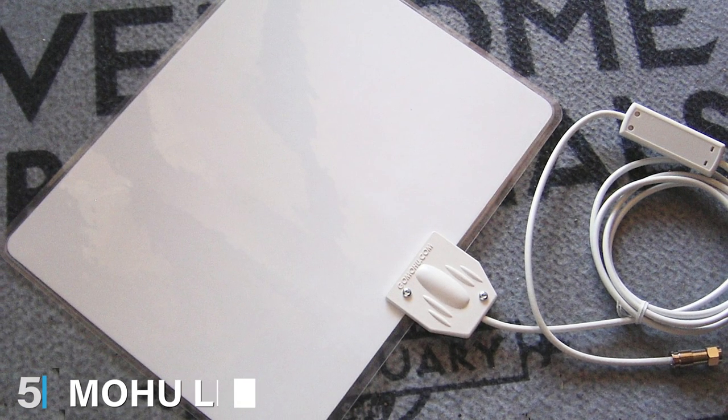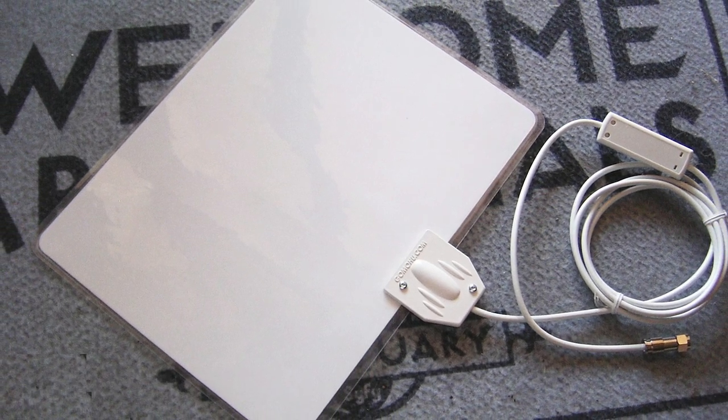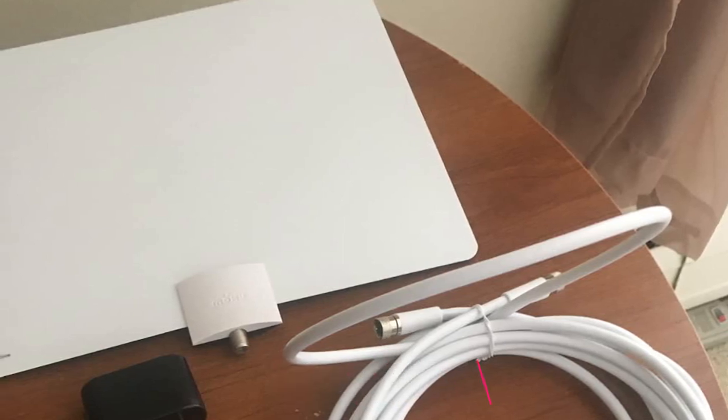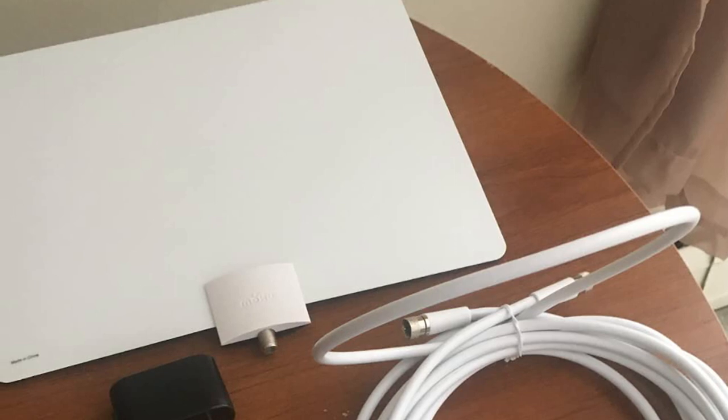The number five position is held by Mohu Leaf Plus Amplified Indoor TV Antenna. The Mohu Leaf Plus might look unassuming as a flat indoor multi-directional antenna, but its USB-powered amplifier adds 15 dB of signal strength, giving it a range of 60-plus miles.